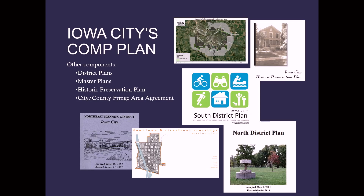The city's comprehensive plan is also made up of various components: the district plans, master plans such as the downtown and riverfront crossings master plan, the historic preservation plan, and the city-county fringe area agreement, which provides policy direction for land located in unincorporated Johnson County but within two miles of our corporate limits. All of these plans and policy documents make up the comprehensive plan.